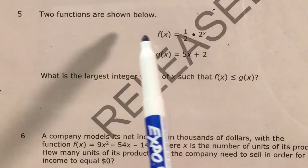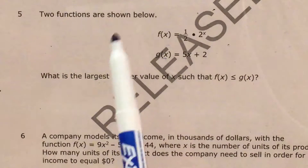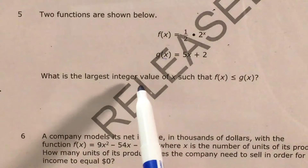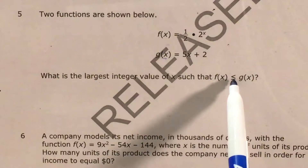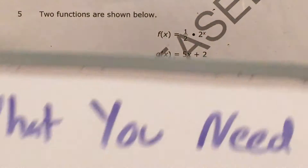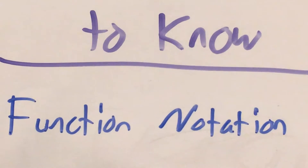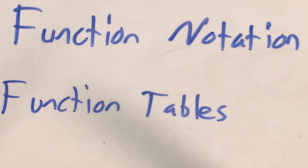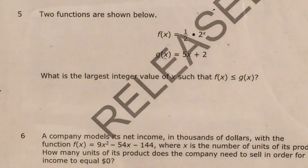The question gives us two functions, f of x and g of x, and we're supposed to find the largest integer value of x so that f of x is less than or equal to g of x. To do well on a question like this, you'll need to know about function notation and also how to use tables to extend and compare functions. So let's start with function notation.